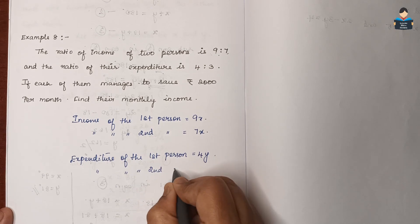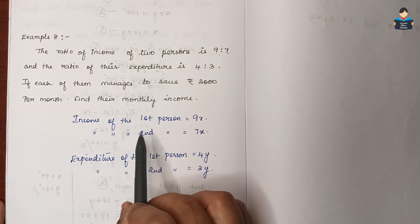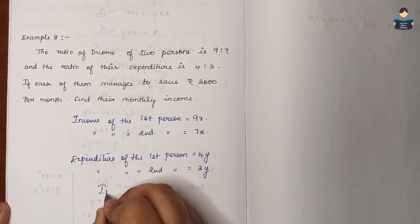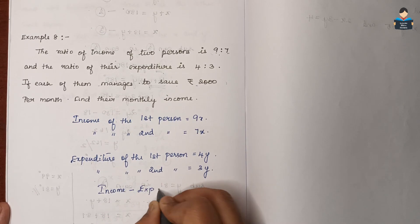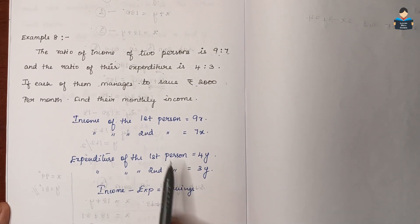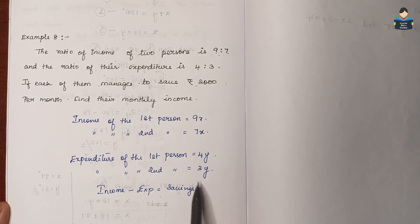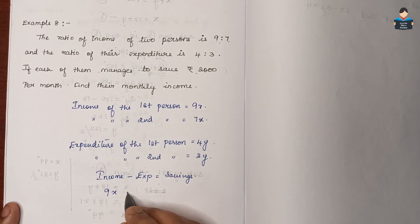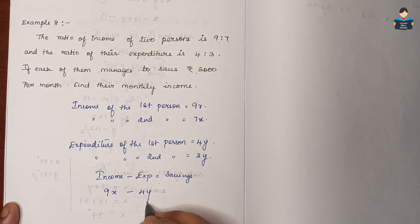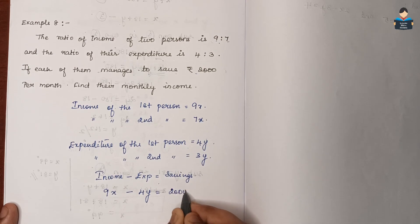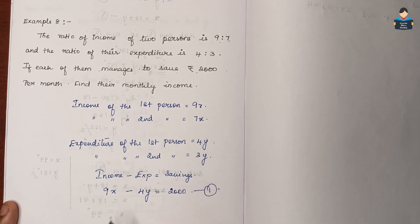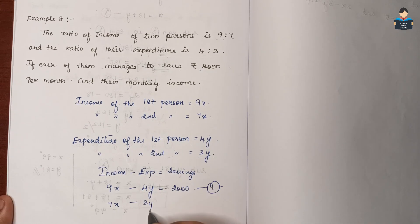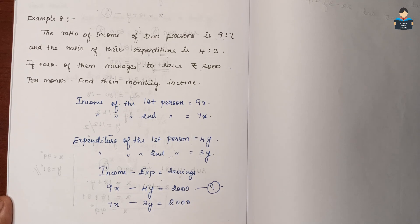The expenditure of the second person is 3y. The savings of each person is 2,000 rupees. So: income of the first person minus expenditure of the first person equals savings — that is 9x minus 4y equals 2,000 (Equation 1). Income of the second person minus expenditure of the second person equals savings — that is 7x minus 3y equals 2,000 (Equation 2).